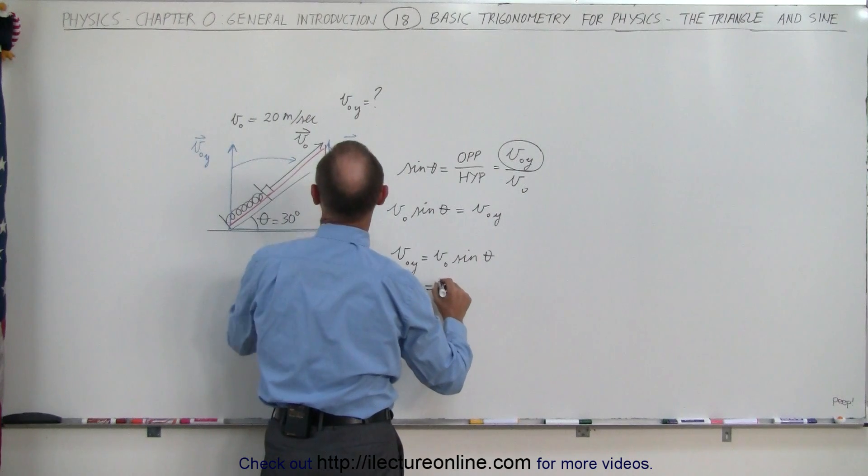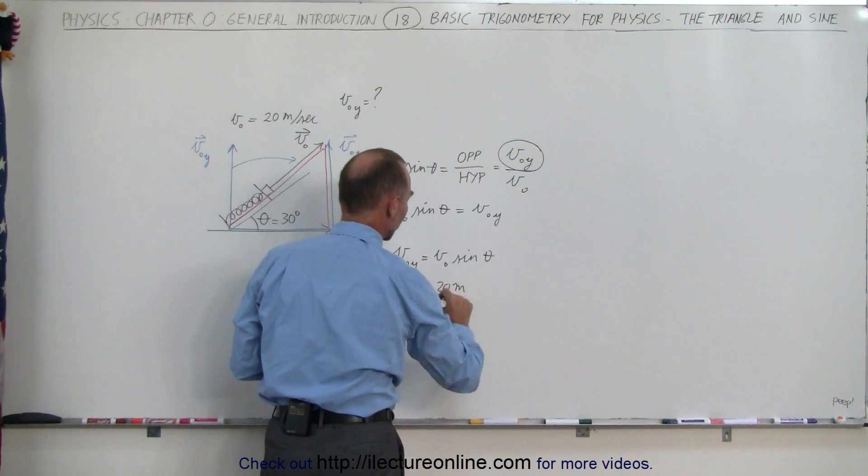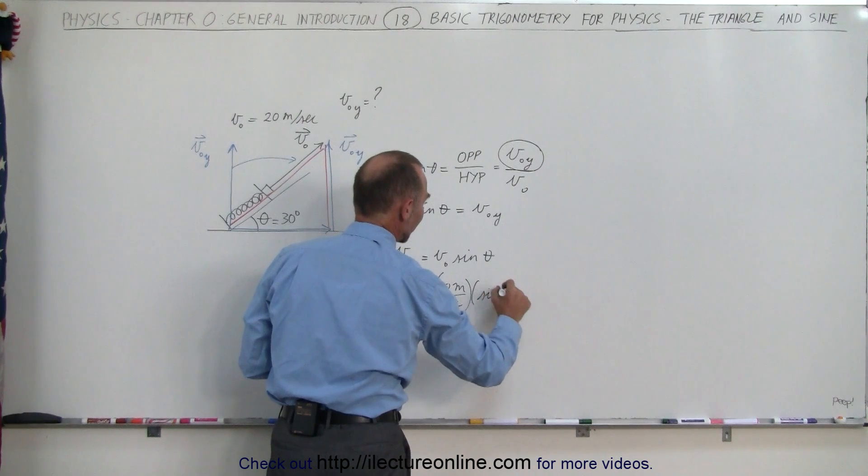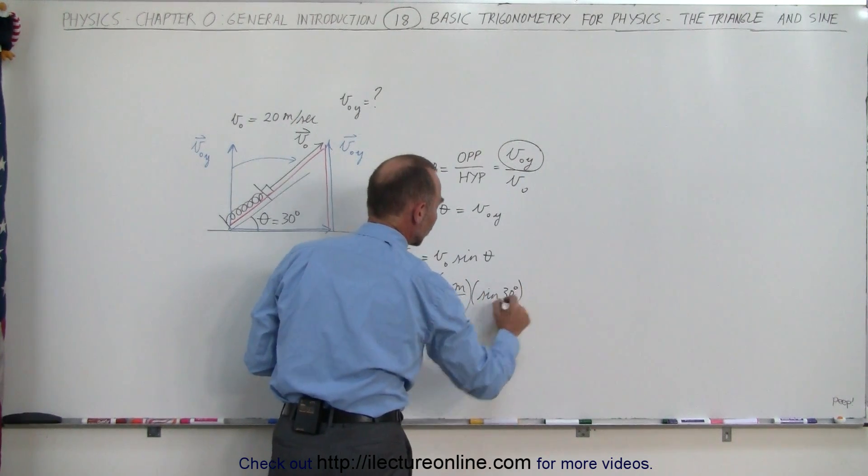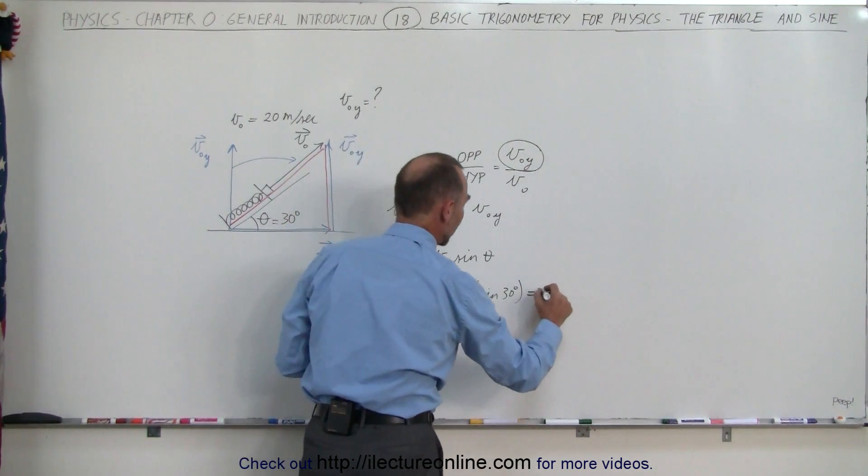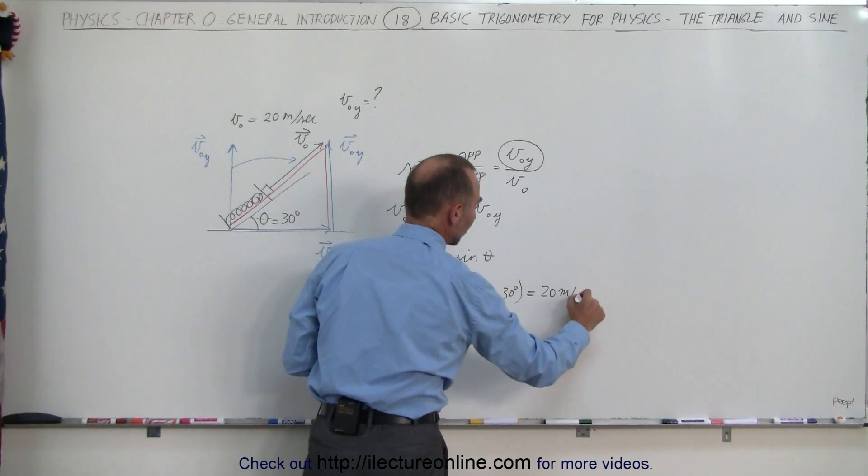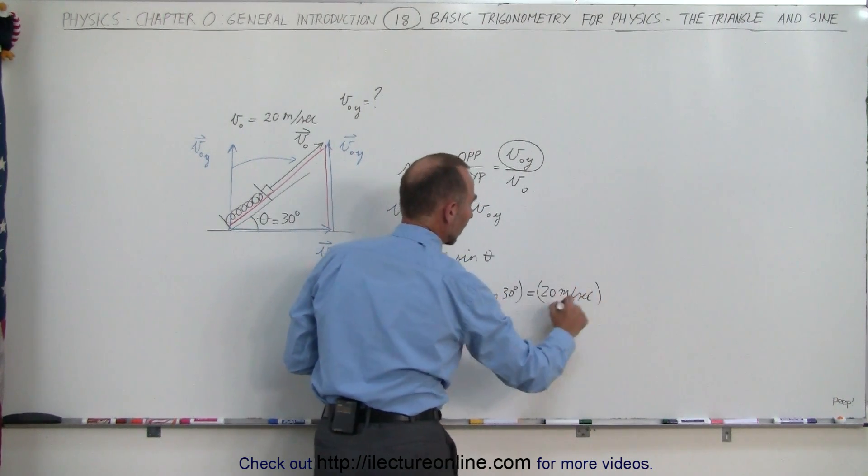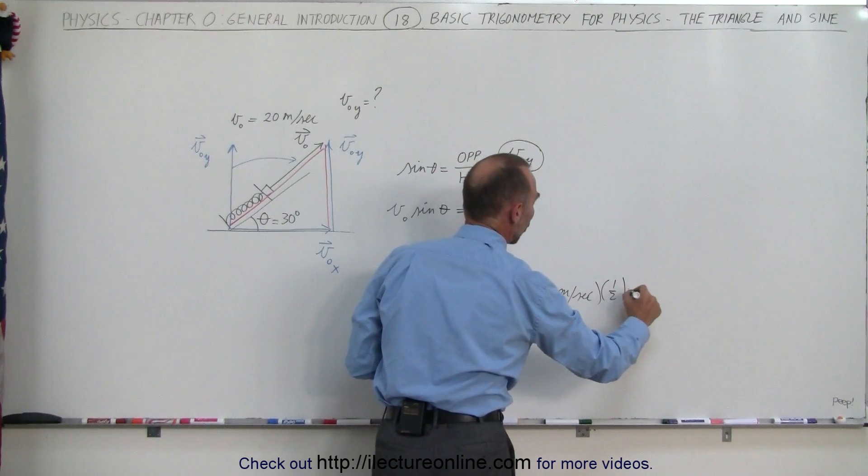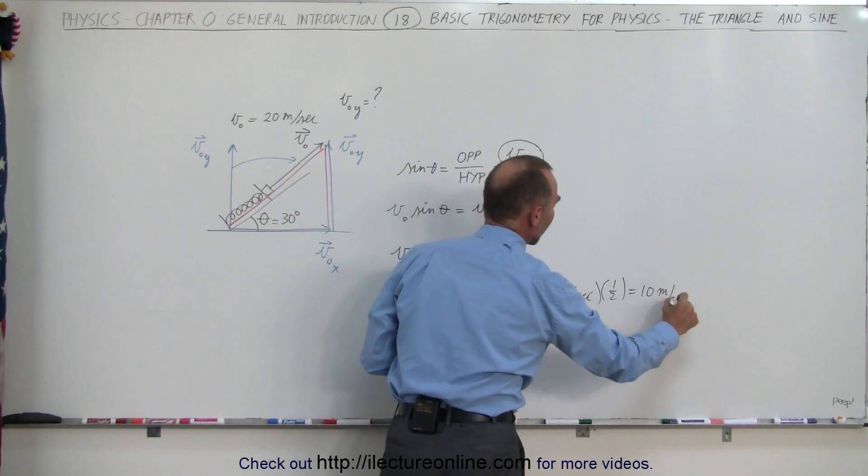And so v sub nought is equal to 20 meters per second. And then we multiply times the sine of theta, which is sine of 30 degrees, which is one half. So this would be equal to 20 meters per second times one half or 10 meters per second.